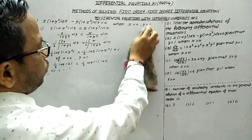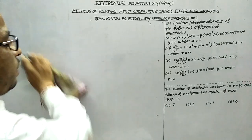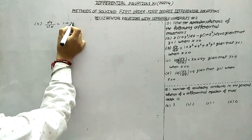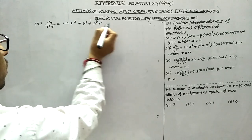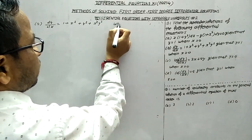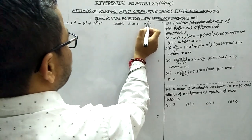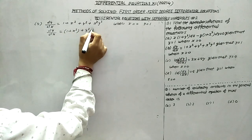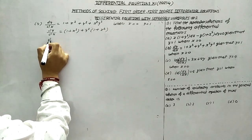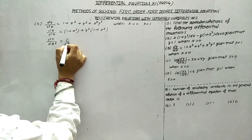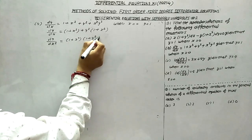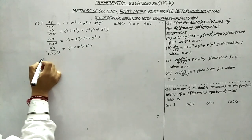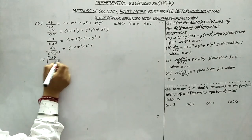Now for question 1b: dy/dx = 1 + x² + y² + x²y², with condition x = 0, y = 1. We factor the right side: dy/dx = (1 + x²) + y²(1 + x²), so dy/dx = (1 + x²)(1 + y²). Separating variables: dy/(1 + y²) = (1 + x²) dx.